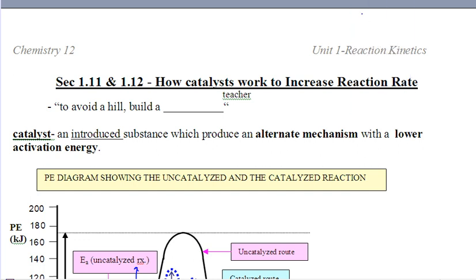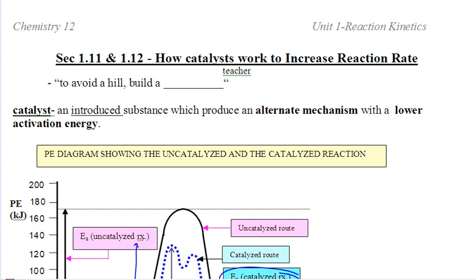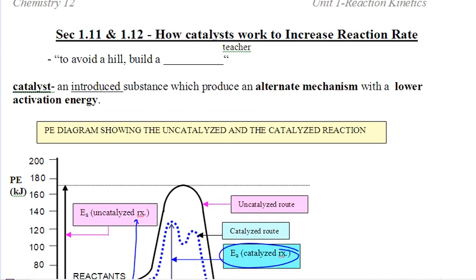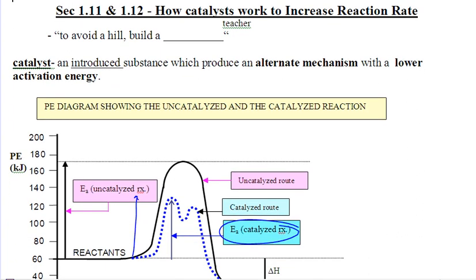Okay, ladies and gentlemen, last section of chapter 1. We're going to combine a few of the ideas about potential energy curves and the idea of a catalyst and show you how a catalyst can help speed up a reaction. We're starting off with another famous quote by some really popular unknown author: to avoid a hill, build a tunnel.